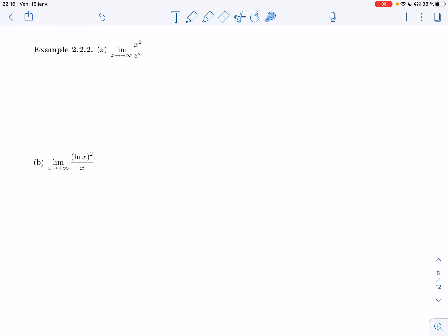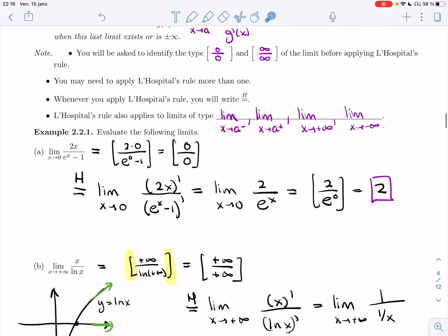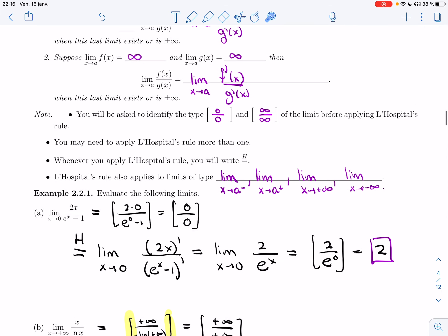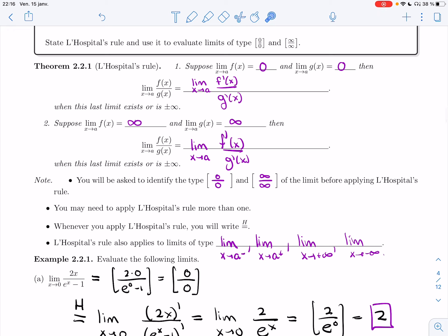All right, welcome back to L'Hôpital's rule. We're going to look at example 2.2.2. We're going to evaluate two different limits using L'Hôpital's rule. One thing that I want to remind you, let's go back to the statement. You can only apply it for 0 over 0 and infinity over infinity. And here, this sentence is going to be important for the next example.